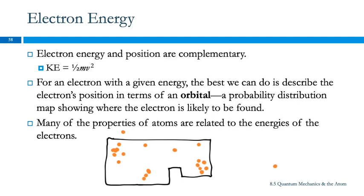This is like a probability map for Andrew. I can't pinpoint exactly where he is, but I can tell you where he probably is. And so that's what an orbital is like — it's a volume where the electron probably is. Exactly where in that volume? No idea.